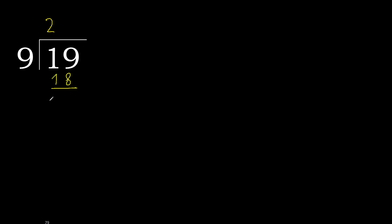19 minus 18 is 1. There is no next number, therefore complete. Always complete with 0. Here, point. 0 point. 10.